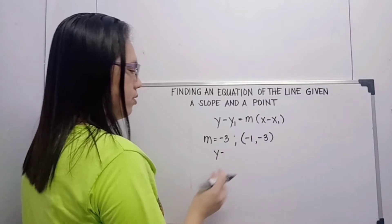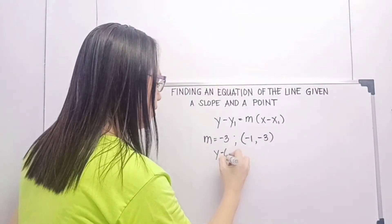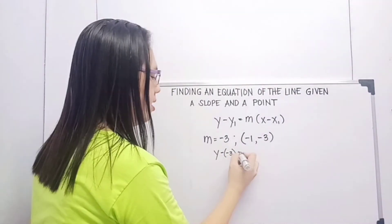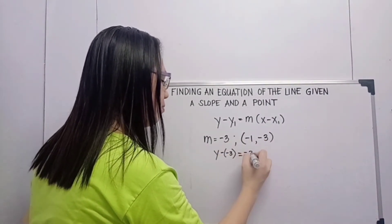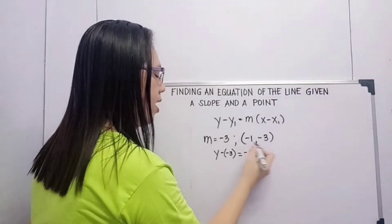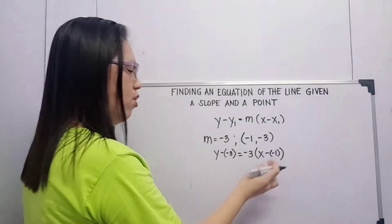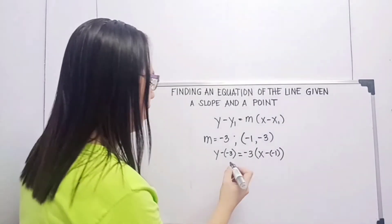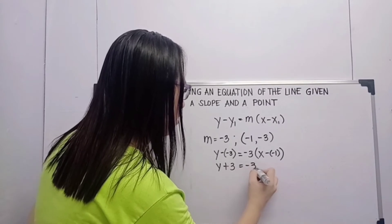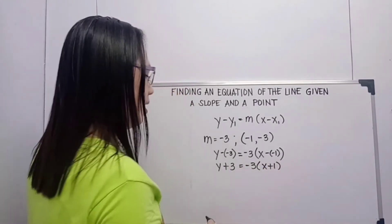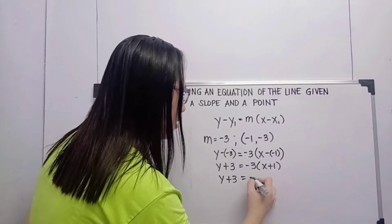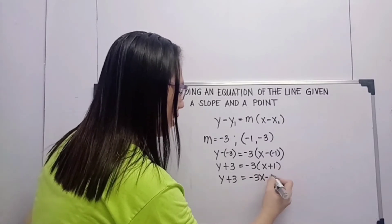y minus — what is our y sub 1? This is our y sub 1, which is negative 3. Note that the minus sign and the negative of negative 3 are different. Then equals — our m or slope is negative 3 — times x minus x sub 1, which is negative 1. Note that the minus and the negative 1 are also different. So this will become y plus 3 is equal to negative 3 times x plus 1. Then we multiply: negative 3 times x is negative 3x, and negative 3 times 1 is negative 3.